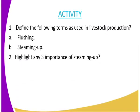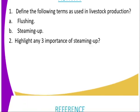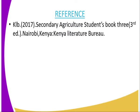We have come to the end of today's lesson. I will close by giving you an assignment. Question one: define the following terms as used in livestock production — A, flushing, and B, steaming up. Question two: highlight any three importance of steaming up. For reference, you can refer to the Secondary Agriculture student book 3, published by Kenya Literature Bureau.